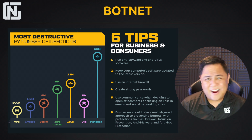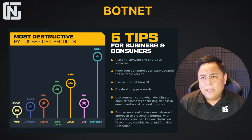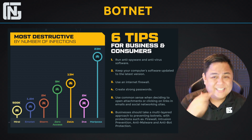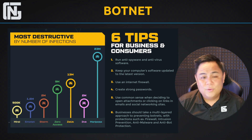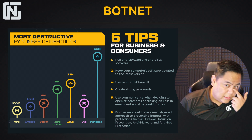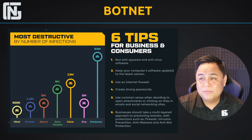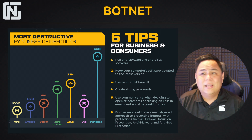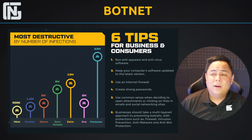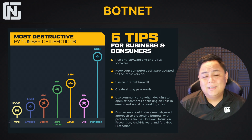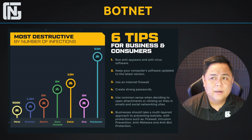Always use an internet firewall — most ISPs will provide you a very simple firewall, so it's not asking too much. Use common sense when deciding to open an attachment or click on links in emails or social networking sites. Be very cautious when clicking on things online. As a business, you should take a multi-layered approach to preventing botnets, with protections such as firewalls, intrusion prevention systems, anti-malware and anti-botnet protection, or endpoint detection and response systems. A business should always be deploying defense in depth, or multi-layered protection.